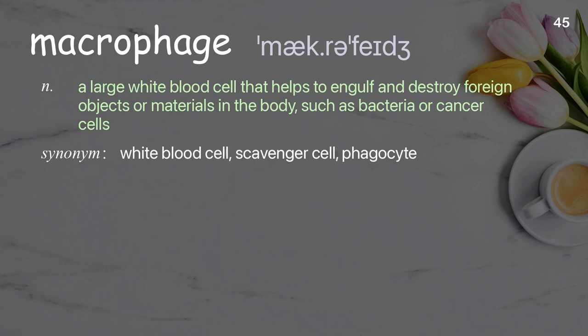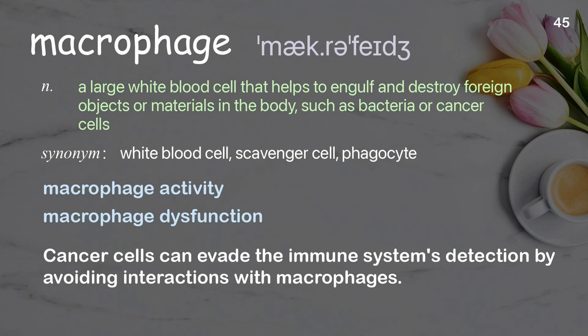Macrophage: a large white blood cell that helps to engulf and destroy foreign objects or materials in the body such as bacteria or cancer cells. Examples: macrophage activity, macrophage dysfunction. Cancer cells can evade the immune system's detection by avoiding interactions with macrophages.